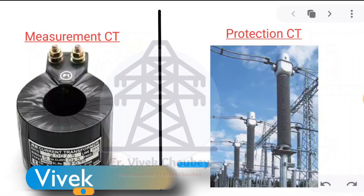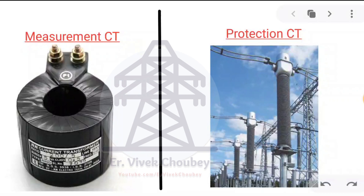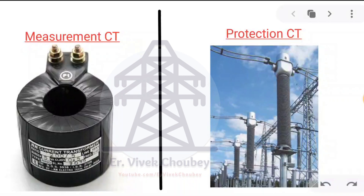Hello and welcome to my channel, this is Vivek. Today in this video we are going to discuss about the difference between a measurement current transformer and a protection current transformer. As you all know, a current transformer is one of the very important instruments when it comes to measurement of huge amperes of current passing through a transmission line, or for protection purpose. A current transformer has a great role to play — it is an important instrument used in substations or power stations. We will discuss in detail about the differences and why they cannot be used interchangeably.